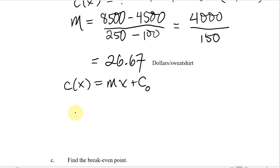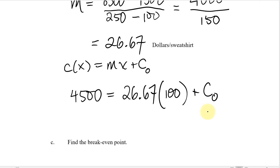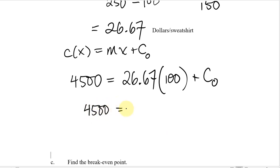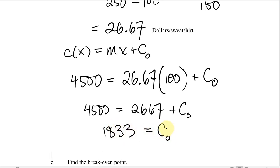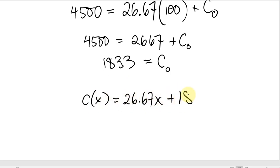I'm going to use the point (100, $4,500). I know the cost is $4,500, the slope is 26.67, and the cost is $4,500 when X is 100. That leaves only one variable — C₀ — to solve for. So 4,500 = 26.67 × 100 + C₀. Subtracting 2,667 from both sides gives C₀ = 18.33. Now I can write the cost function: C(X) = 26.67X + 18.33.